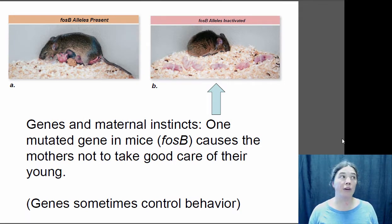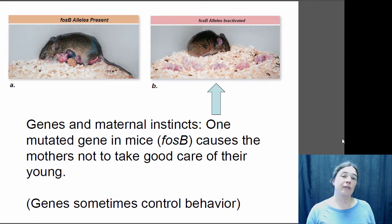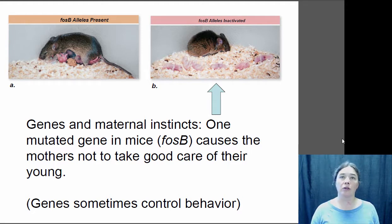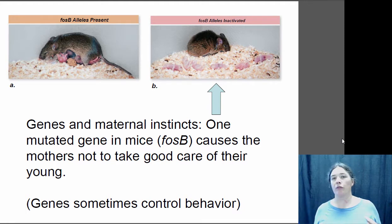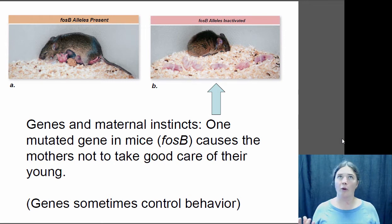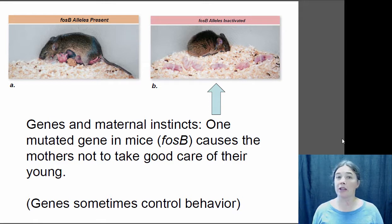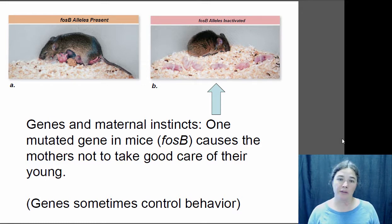Some behaviors do have very strong genetic determination. For example, maternal behavior in mice can be influenced by a single gene — the fosB gene. A mouse with a normal fosB gene will exhibit normal maternal behavior: the mother mouse will crouch over her offspring to keep them warm, and if babies are separated, she'll gather them up and sit on them again. Mice with a non-functional fosB gene mutation don't exhibit those behaviors — they won't gather up their babies or spend as much time keeping them warm. So that maternal behavior is regulated by this one single gene.